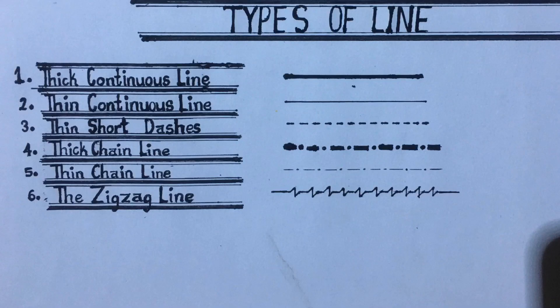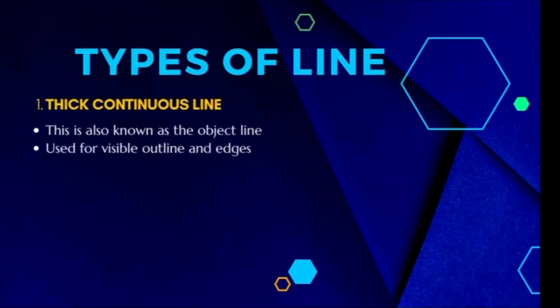Today we'll be talking about the types of lines we have and their uses. As we go on in the course of our classes, we will start to understand more. The first line we have is the thick continuous line, which is also known as the object line.